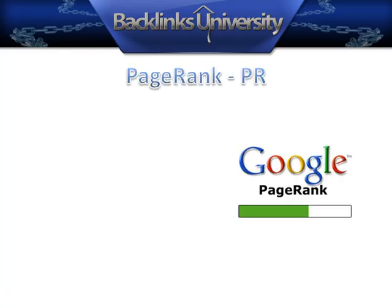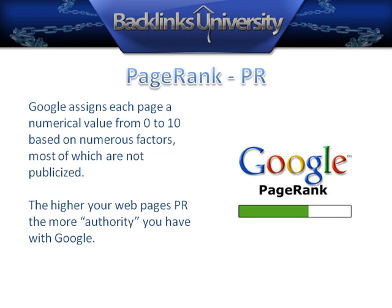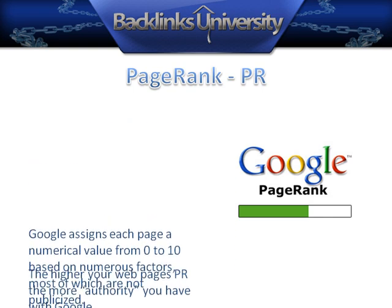PageRank. Google assigns each page a numerical value from 0 to 10 based on numerous factors, most of which are not publicized. The higher your web page's PR, the more authority you have with Google.